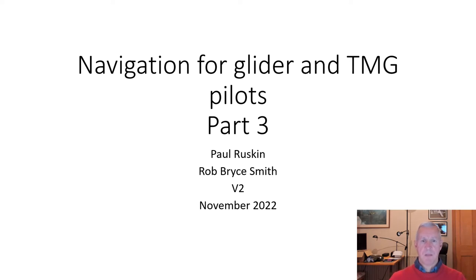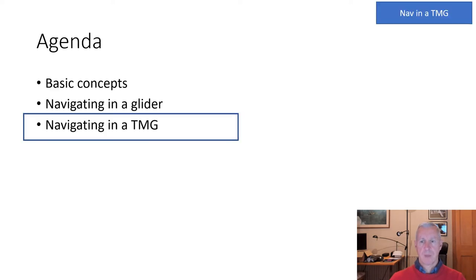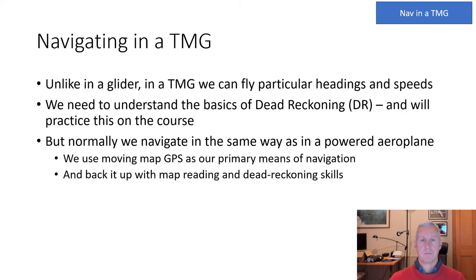This is the third part of the package for navigation for glider and TMG pilots. In this part we're going to be talking about navigating in a TMG. Unlike in a glider, in a TMG we can fly particular headings and speeds. In a glider we have to stop and circle, which makes navigation rather different.